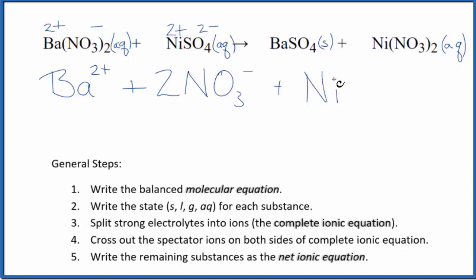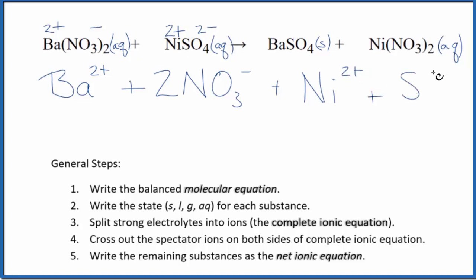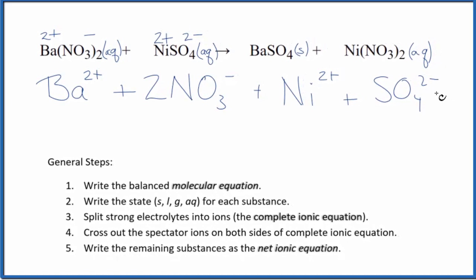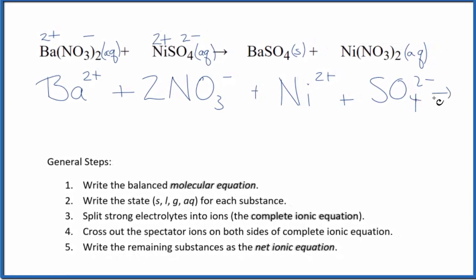So we have our nickel 2+ ion, Ni²⁺, and then we have our sulfate, SO4²⁻. So these are the reactants in our net ionic equation.